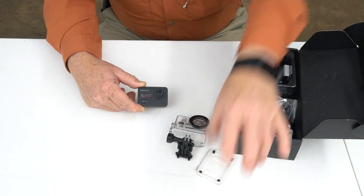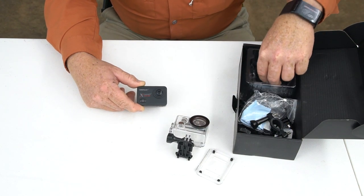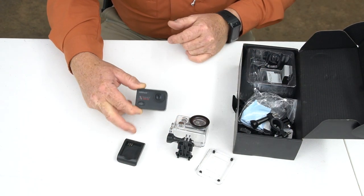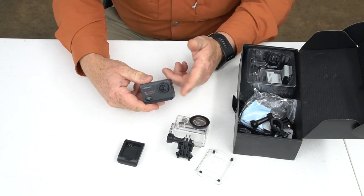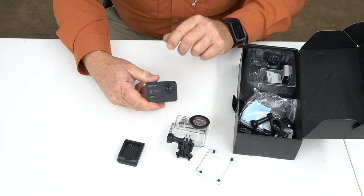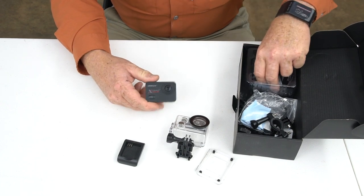It comes with the waterproof housing, like most of them come with. But this one comes with an additional door for the waterproof housing in case the original one gets damaged. It comes with an external battery charger. Most of these cameras don't come with an external battery charger.